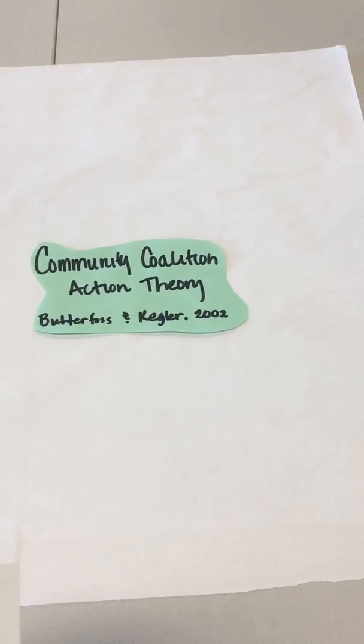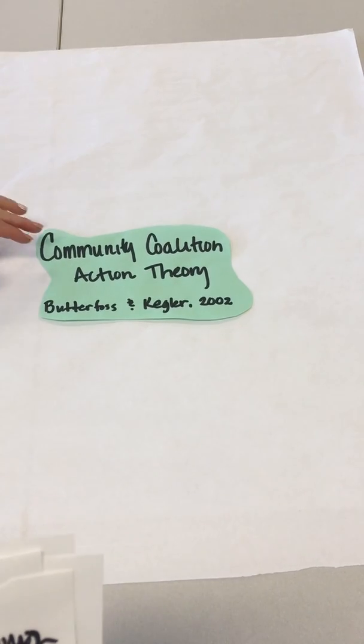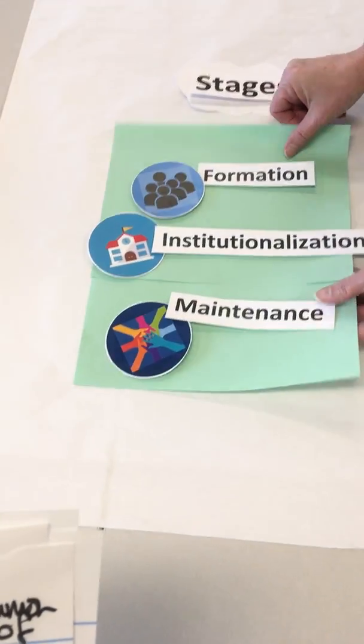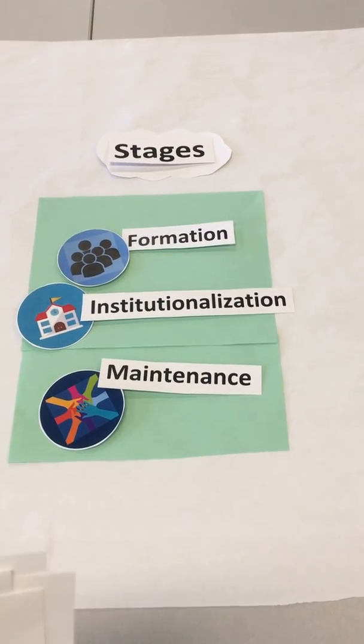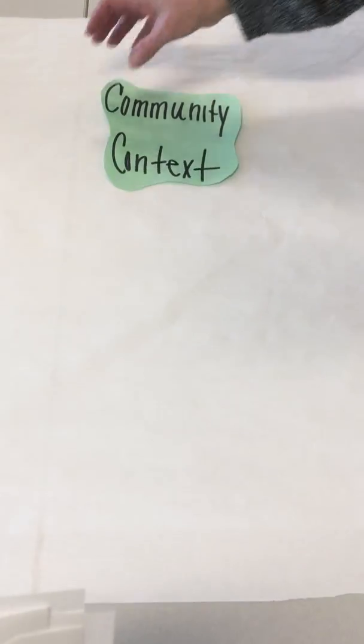Welcome to our Common Craft presentation of the Community Coalition Action Theory by Butterfoss and Kegler, 2002. There are a number of stages in coalition development. Formation, institutionalization, and maintenance are all included.